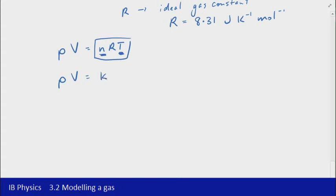We can see that we could write that P is equal to K over V. Tracking that backwards, P is proportional to 1 over V. So there's Boyle's Law.